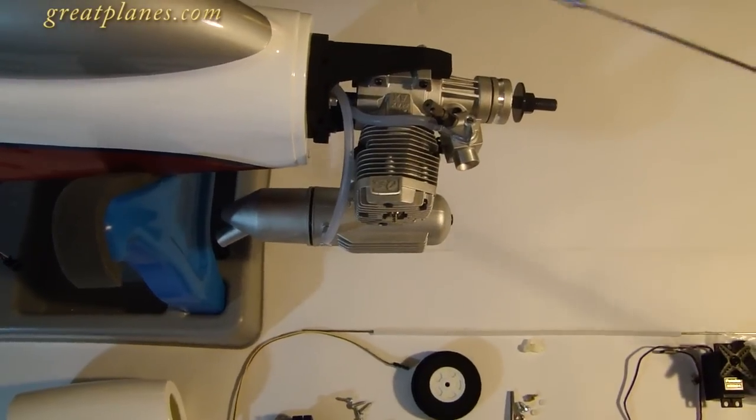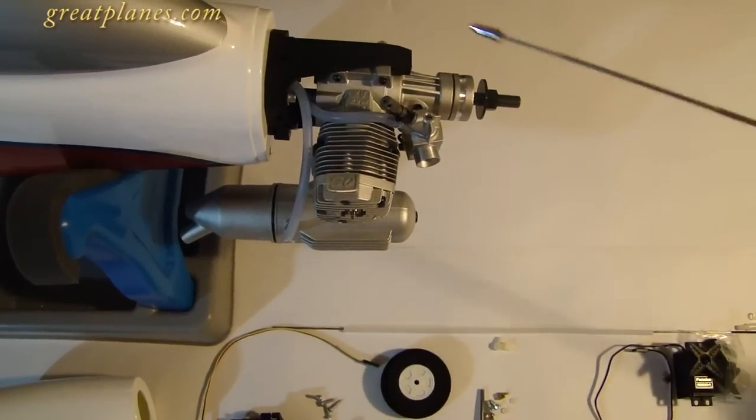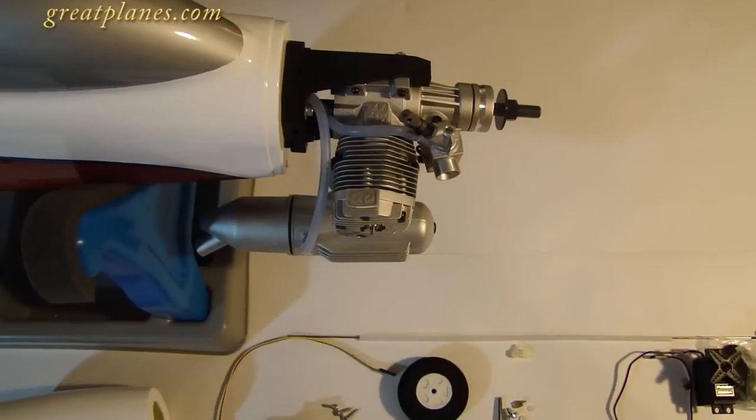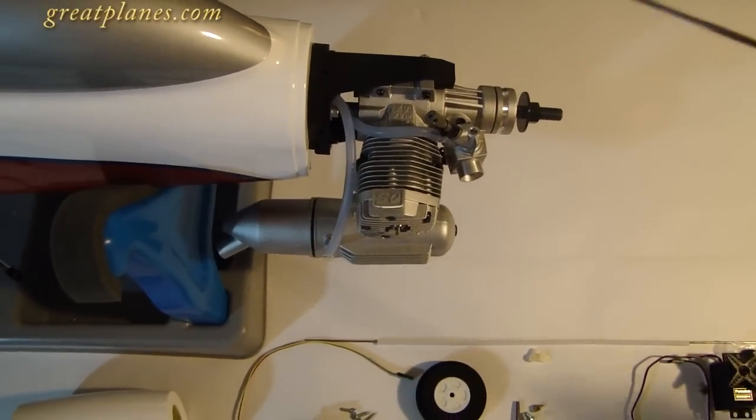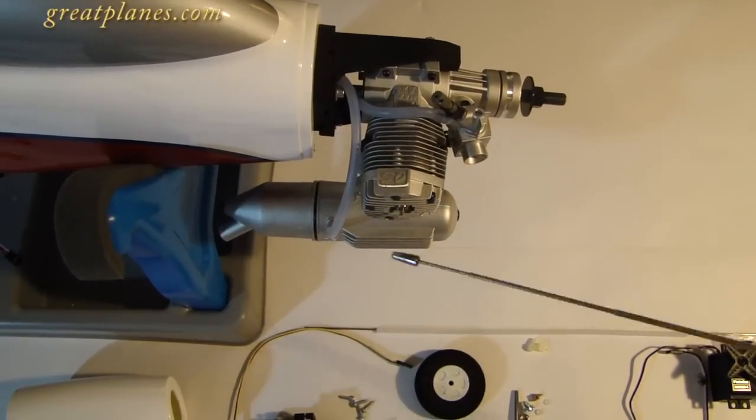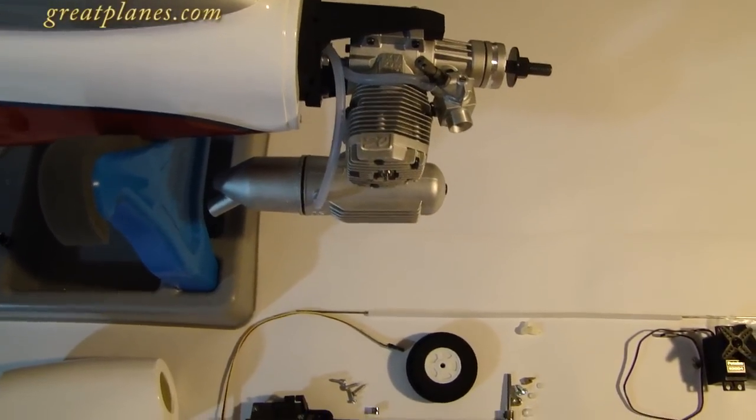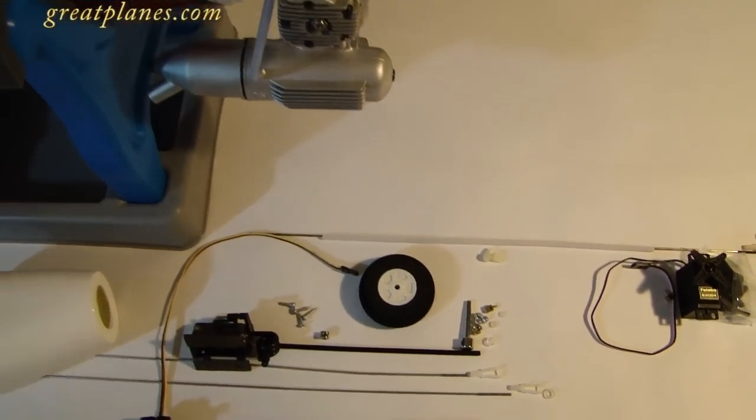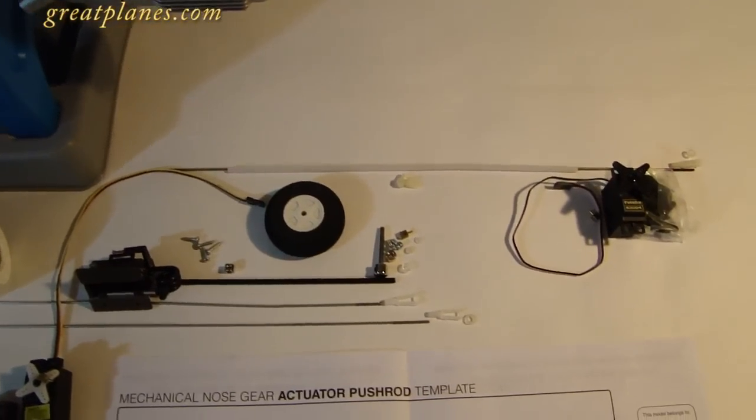We have our engine installed and it's properly spaced from the firewall to the front of the engine at 4 and 5 eighths of an inch. Our fuel tank's installed inside our fuselage. We have our fuel lines hooked up and our muffler installed on our engine.